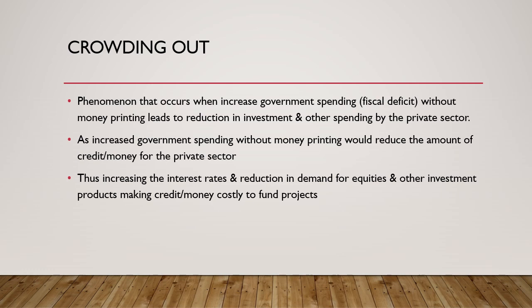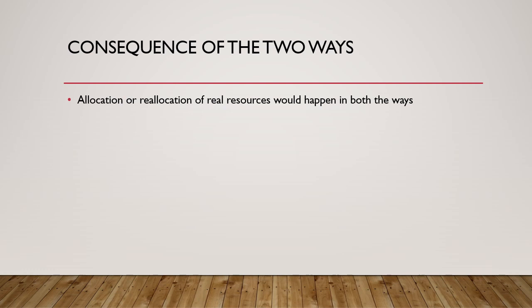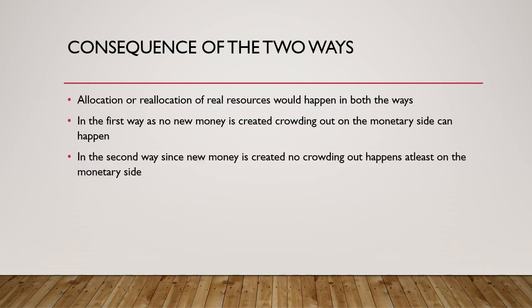What are the consequences of the two ways of funding the fiscal deficit? In both cases, a reallocation of real resources will happen in the economy. However, in the first case, since little or no new money is created, crowding out will occur on the monetary side, which can affect future investments and hence growth of the economy. In the second way, since new money is being created, no crowding out happens on the monetary side.